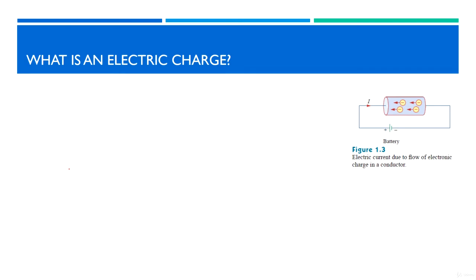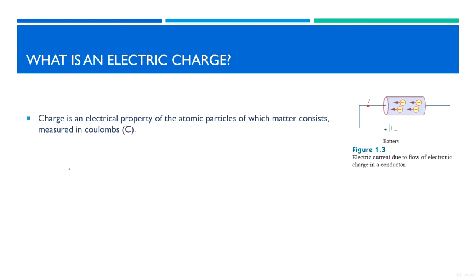Now we need to identify what is an electric charge. A charge is an electrical property of the atomic particles of which matter consists, and they are measured in coulombs.